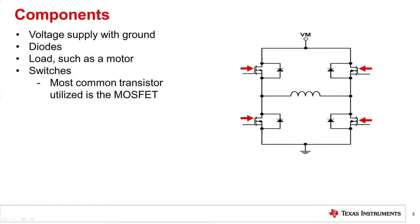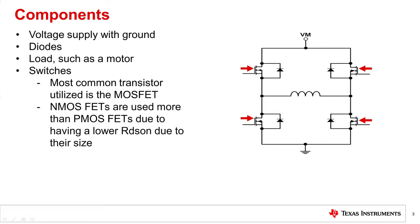The most common transistor found in an H-bridge is a MOSFET. MOSFETs are used more than bipolar junction transistors due to their thermal capabilities and their efficiency. N MOSFETs are more common than P MOSFETs because P MOSFETs require a larger area for the same current carrying capability.